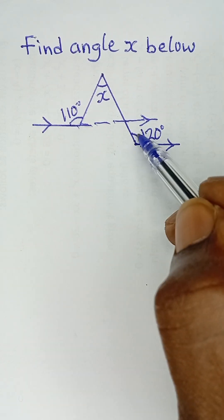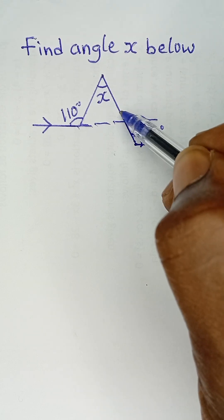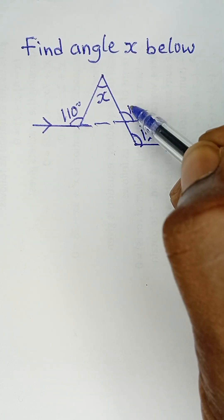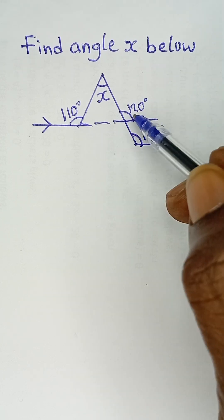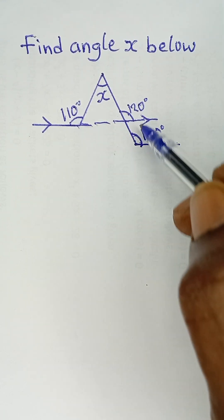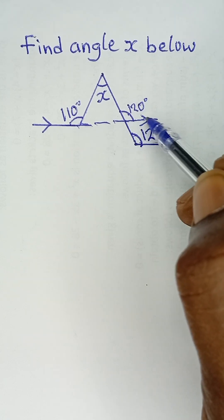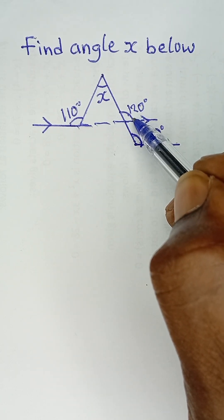Since this is 120 degrees sitting on this parallel line, this part will also be 120 degrees sitting on the parallel line because corresponding angles are equal. This position sitting on this parallel line corresponds to this position sitting on the same parallel line, so this portion will also be 120 degrees.